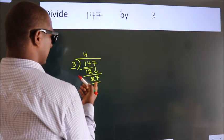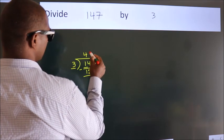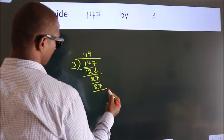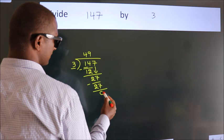When do we get 27? In 3 table, 3 nines 27. Now we subtract. We get 0.